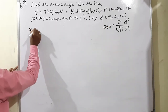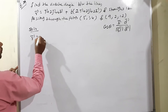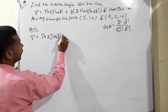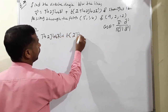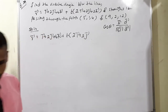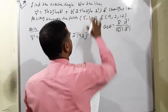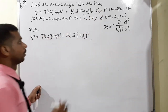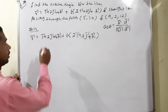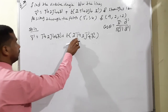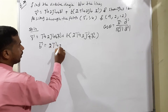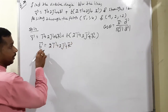Solution. First line: r vector equals i plus 2j plus 4k plus t times (2i plus 2j plus k). So b vector equals 2i plus 2j plus k. Modulus of b vector equals square root of 4 plus 4 plus 1 equals square root of 9 equals 3.